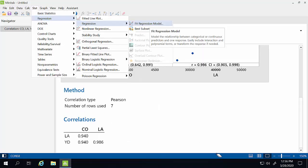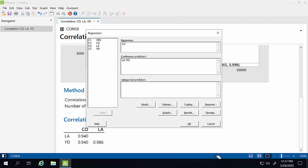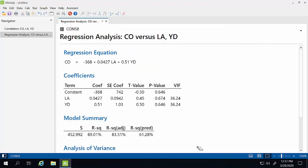Let's go ahead and test the VIFs anyway. So we'll go to stat, regression, regression, fit regression model. We're attempting to predict consumption, so that's our response variable. And then we're trying to use liquid assets and disposable income as our predictors. Click OK, and we'll get our regression output.